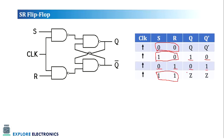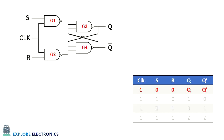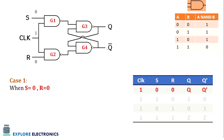Now let us understand how the flip-flop actually works by taking the cases one by one. In case 1, S is 0 and R is 0. To understand this, we need to look at how the NAND gate behaves. The NAND gate output: for 0-0 inputs output is 1, for 0-1 output is 1, for 1-0 output is 1, and for 1-1 output is 0. Knowing this truth table, we can easily understand the SR flip-flop working.